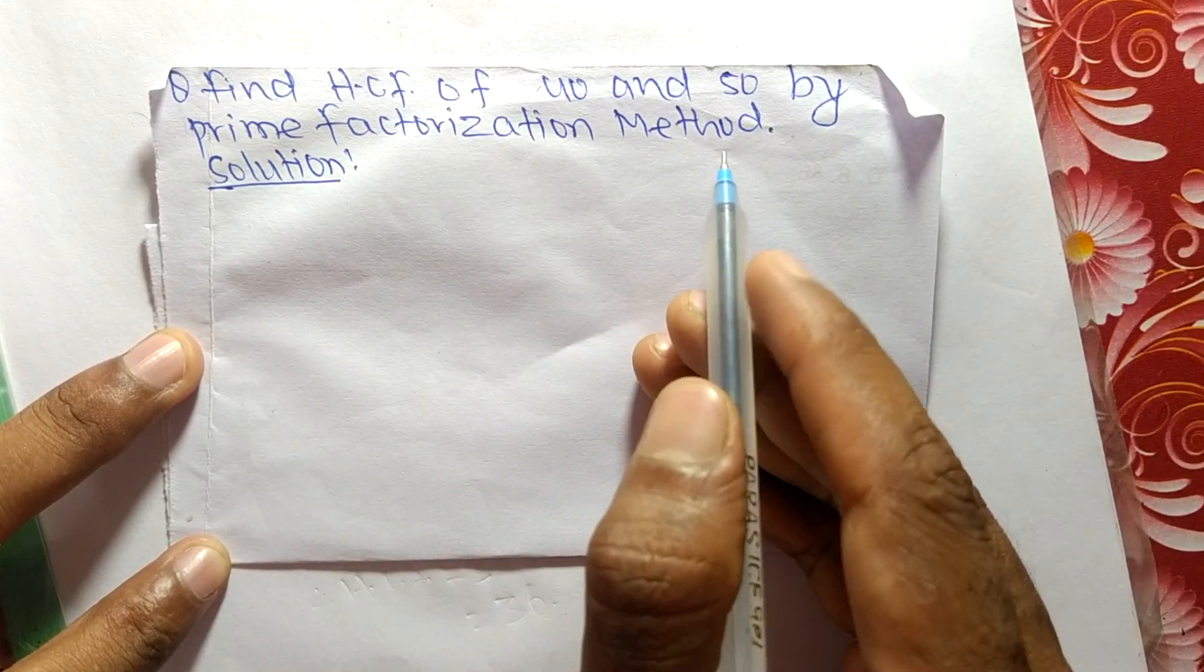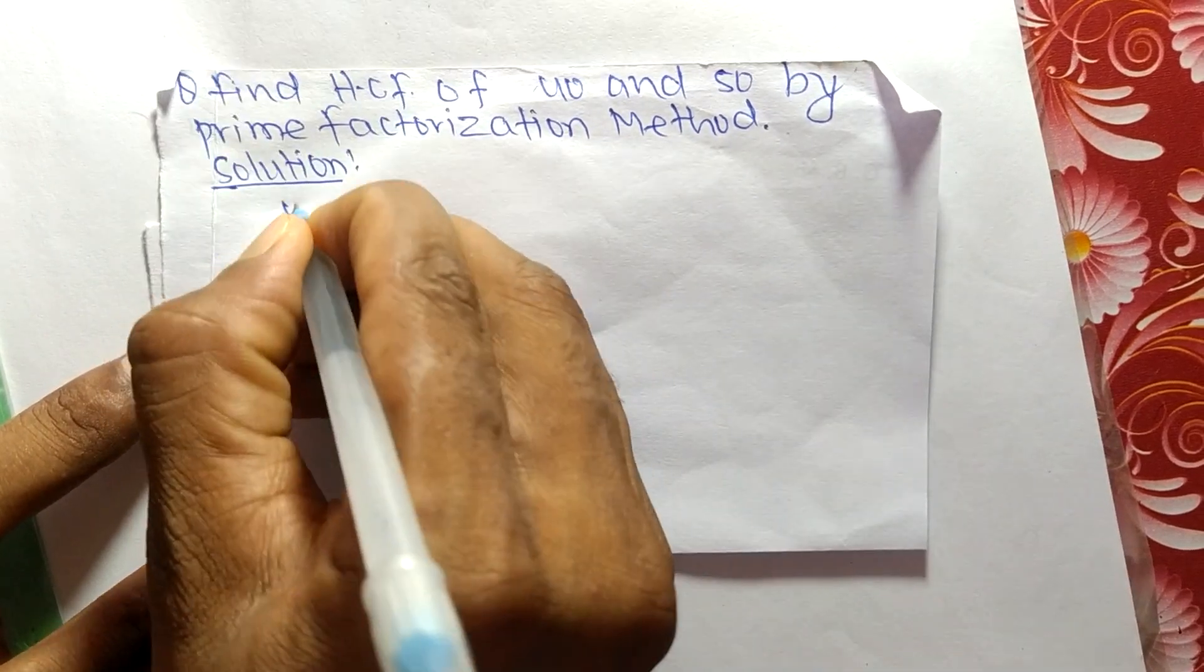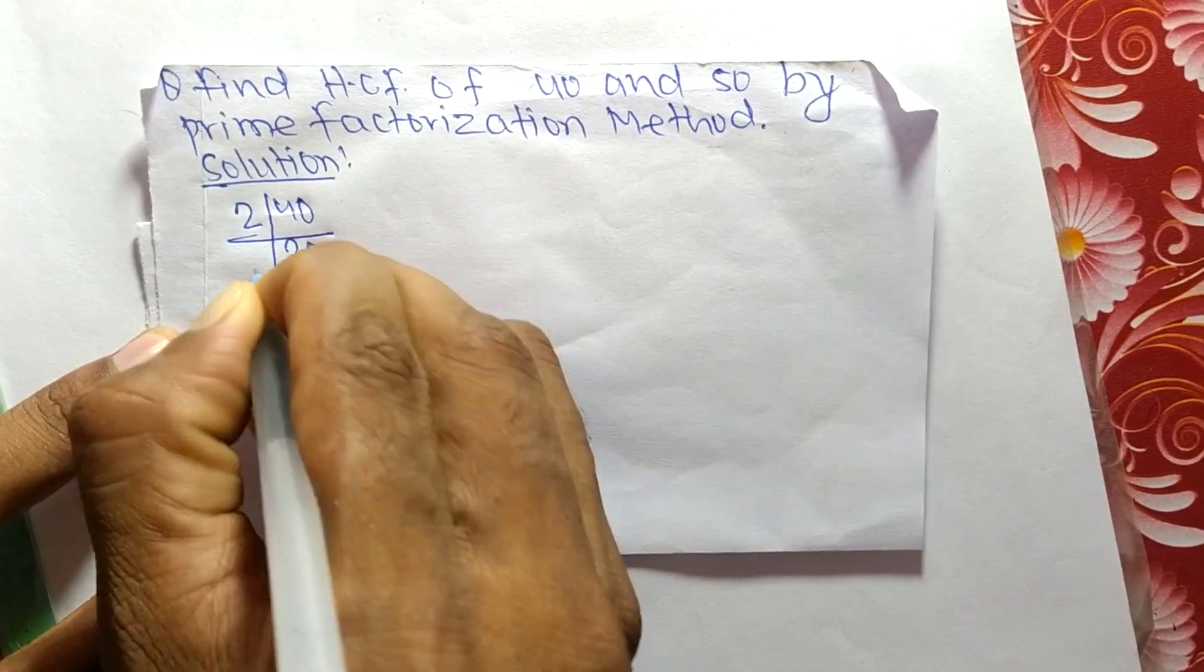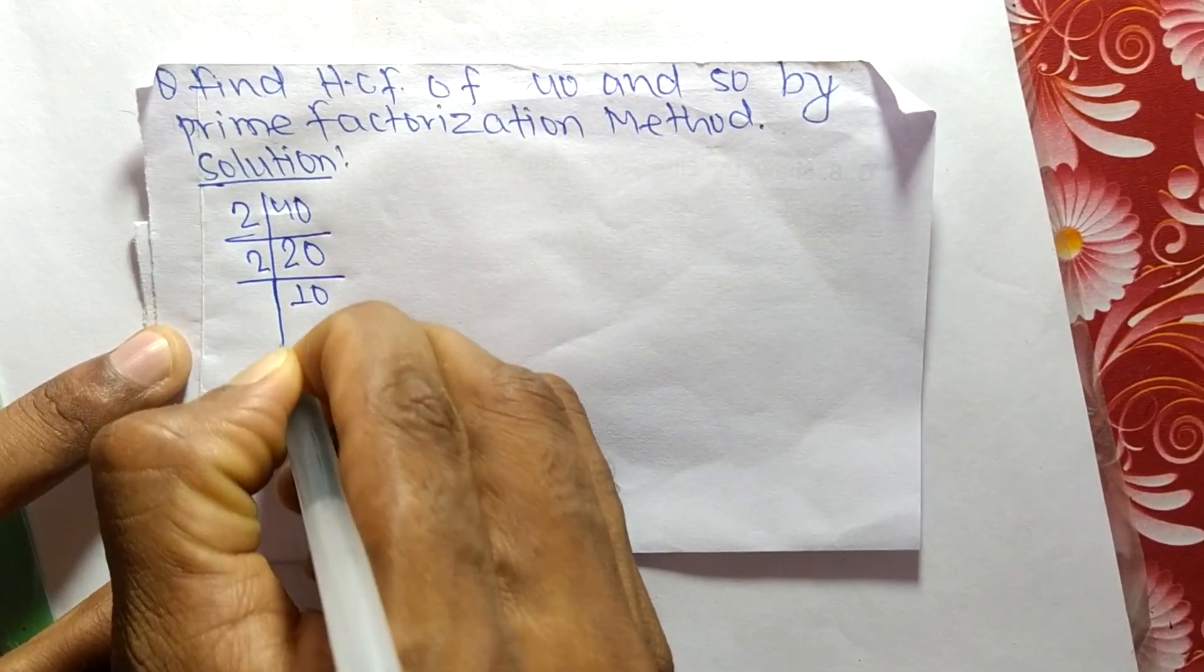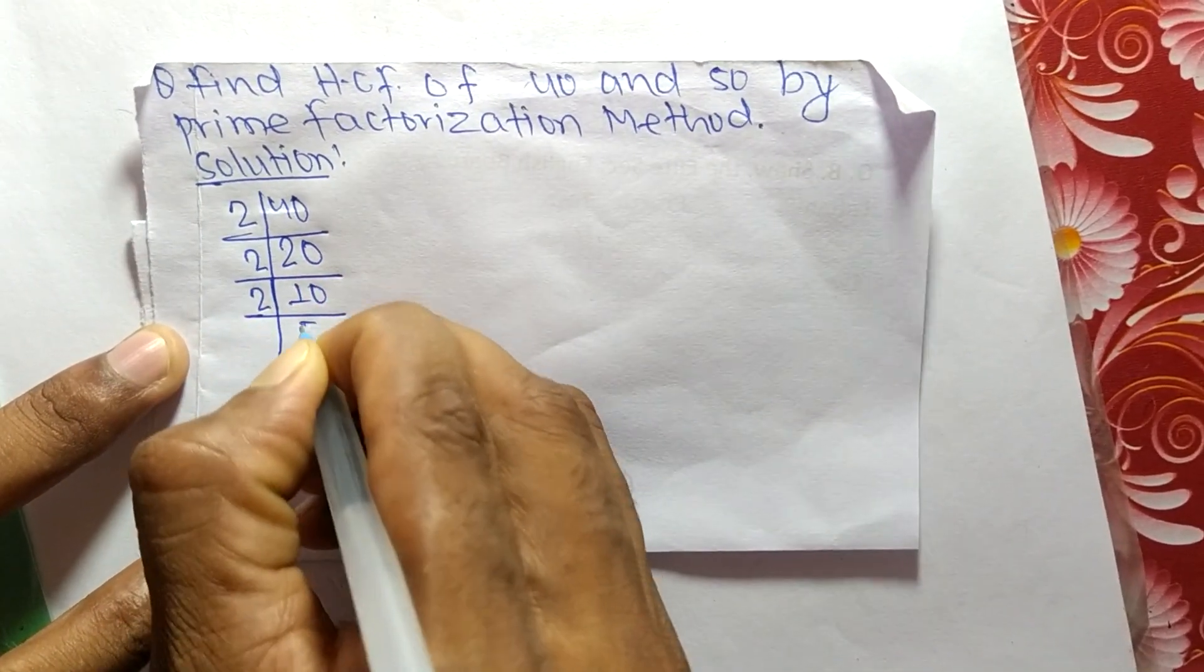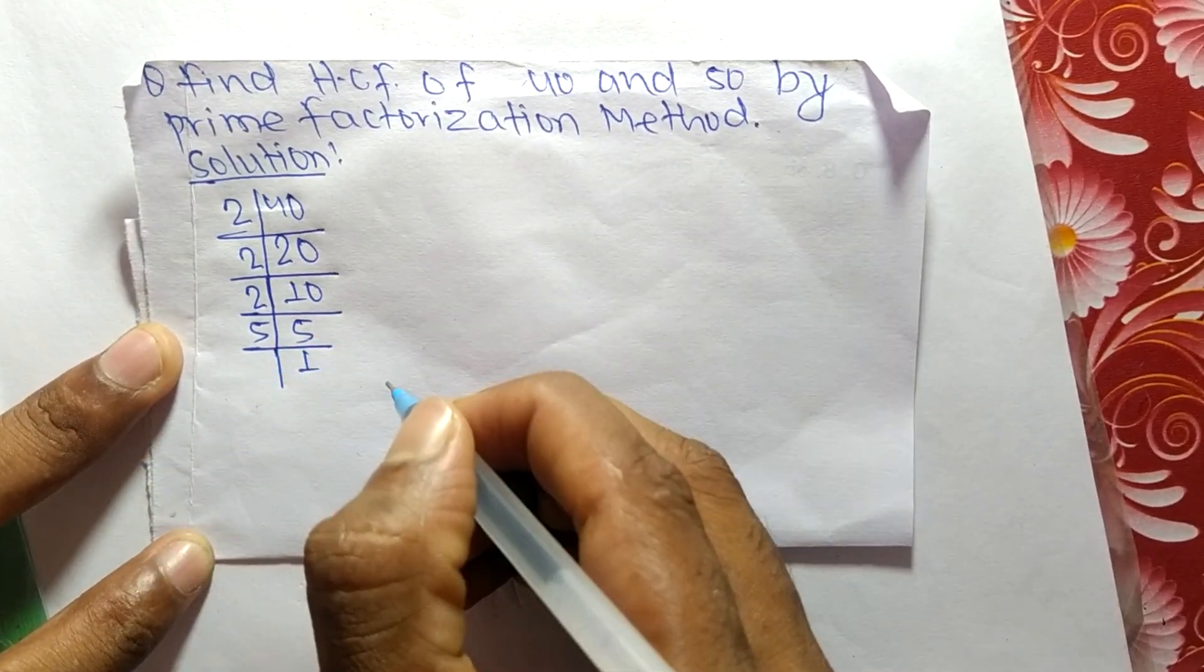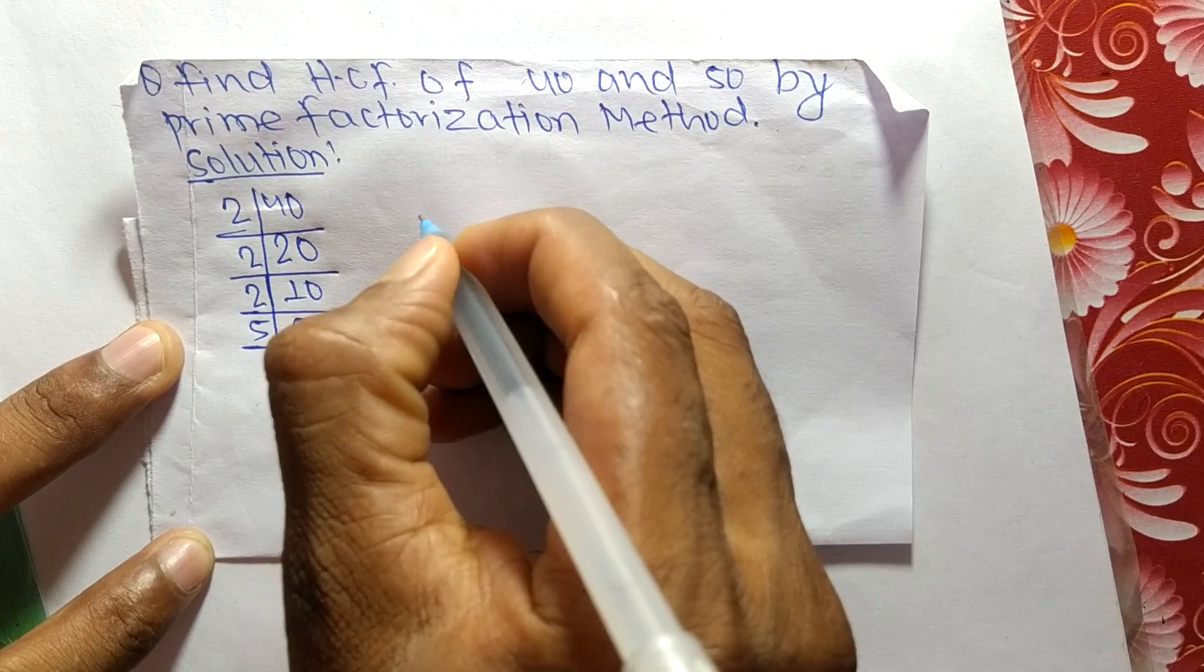First, we find out the prime factors of 40. It is 2 times 20 equals 40, 2 times 10 equals 20, 2 times 5 equals 10, and 5 times 1 equals 5.